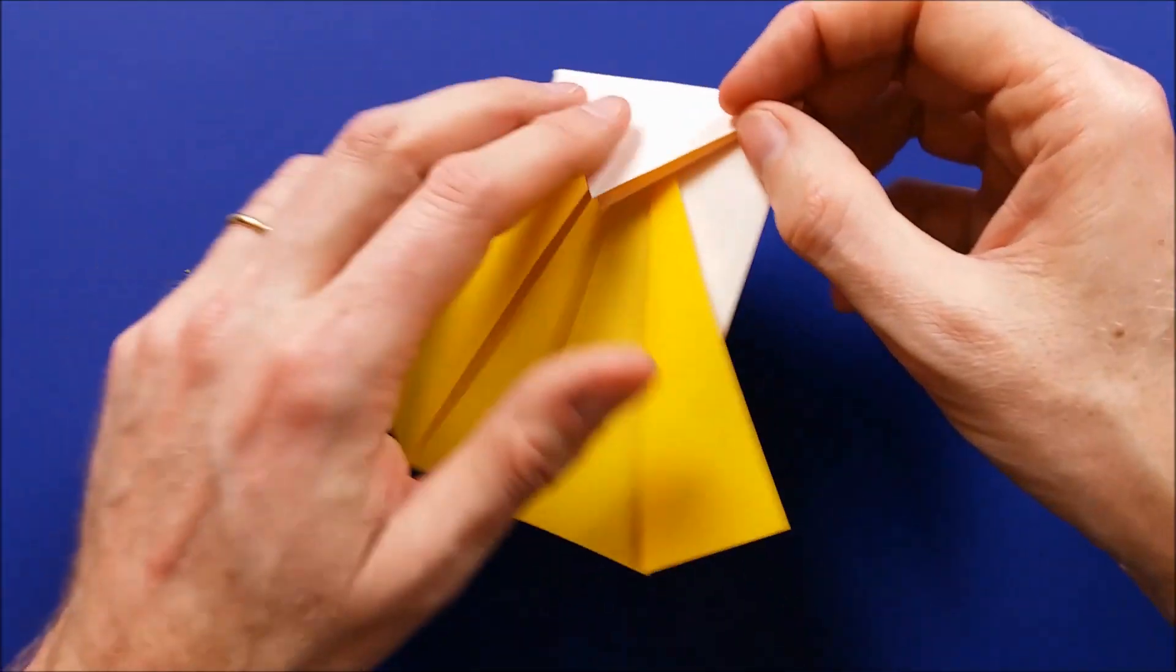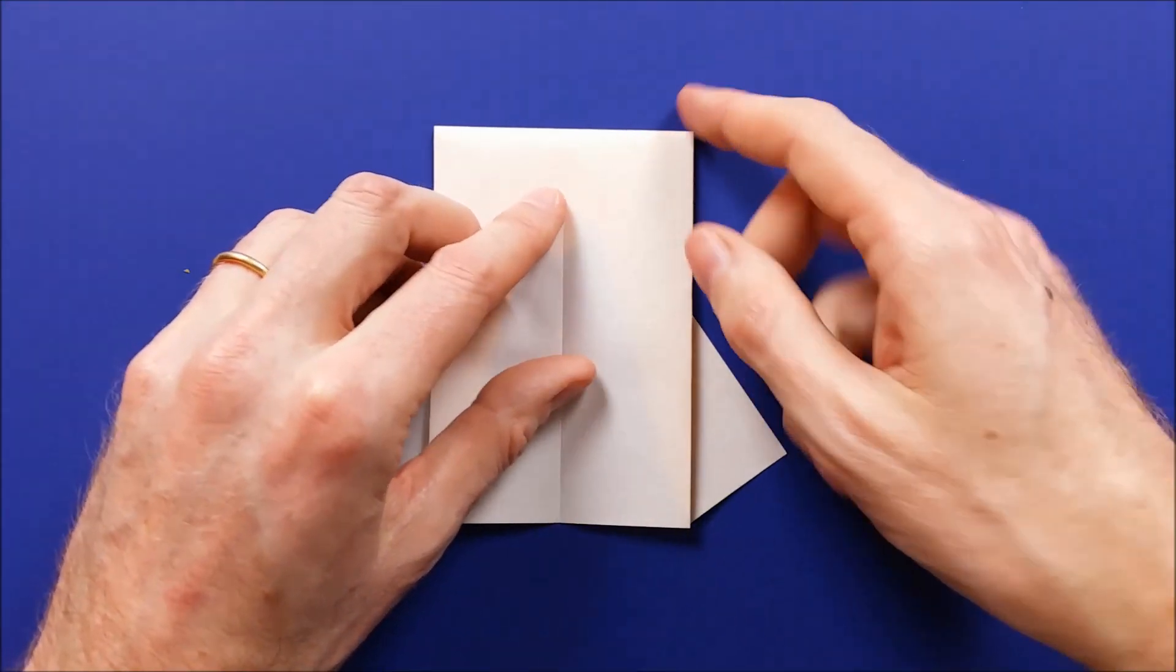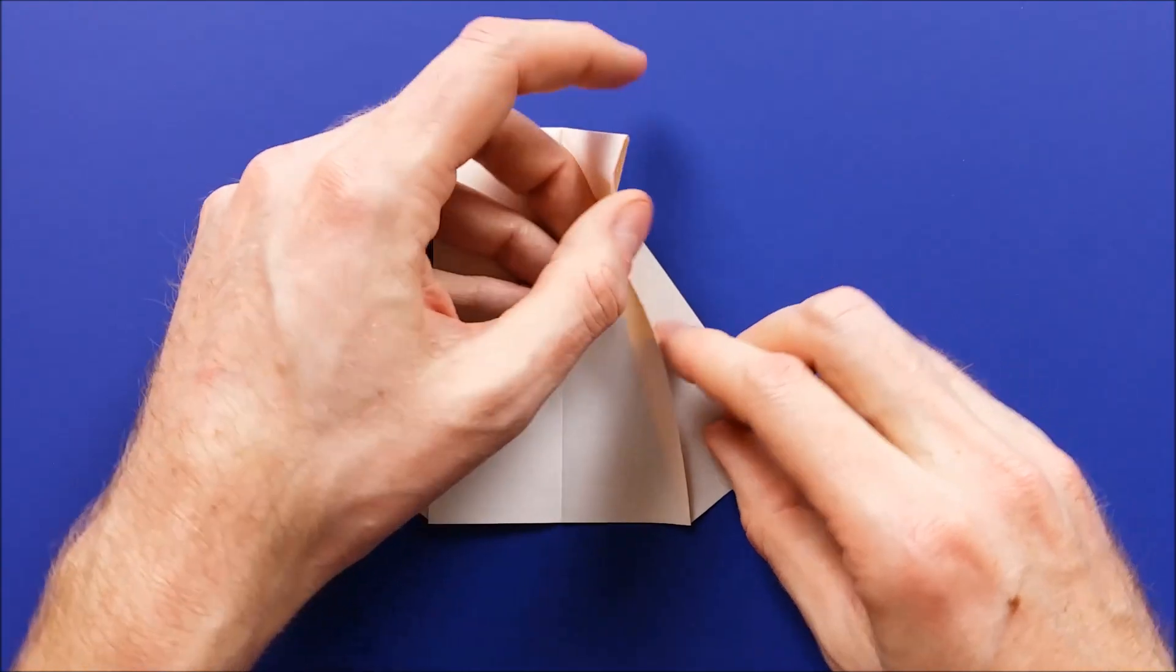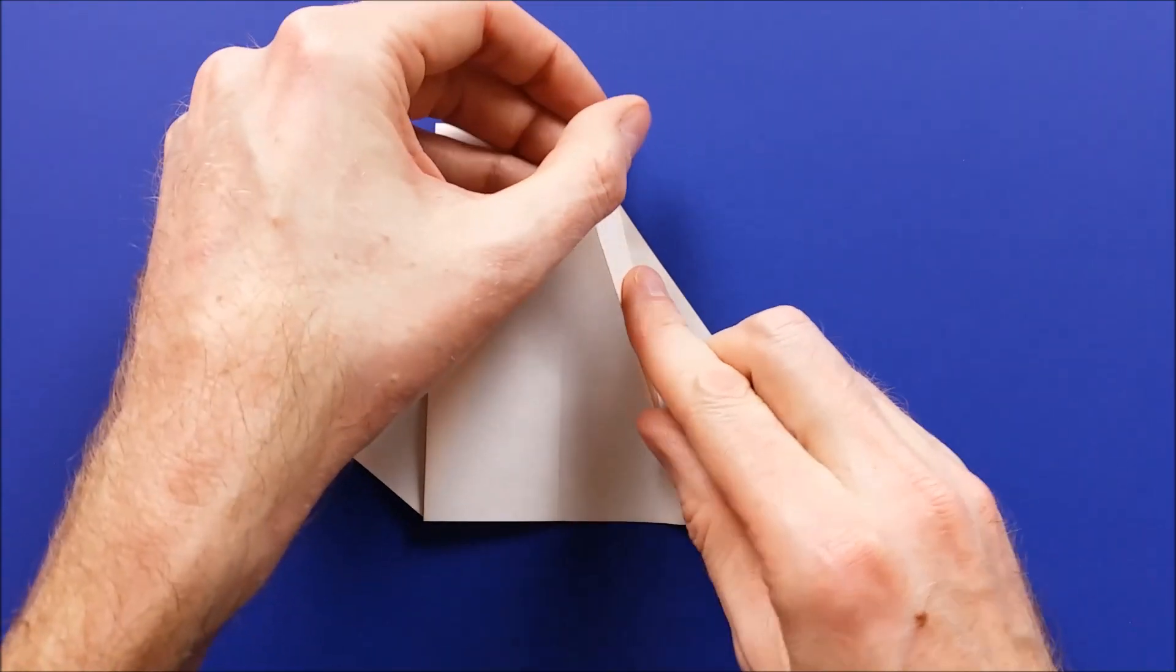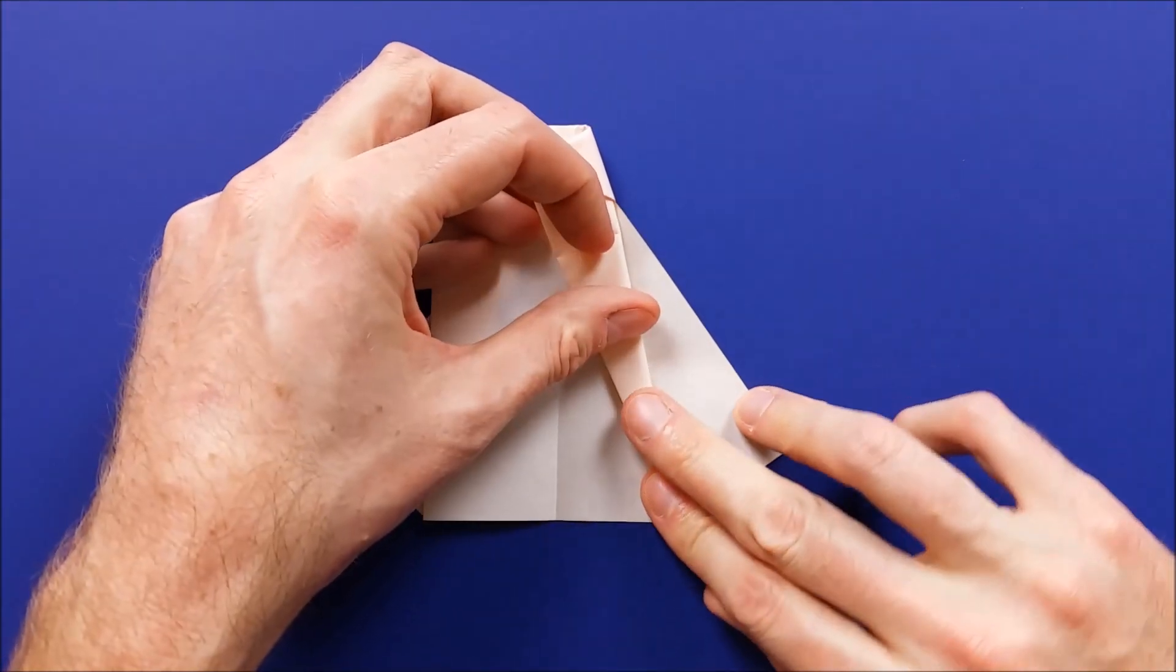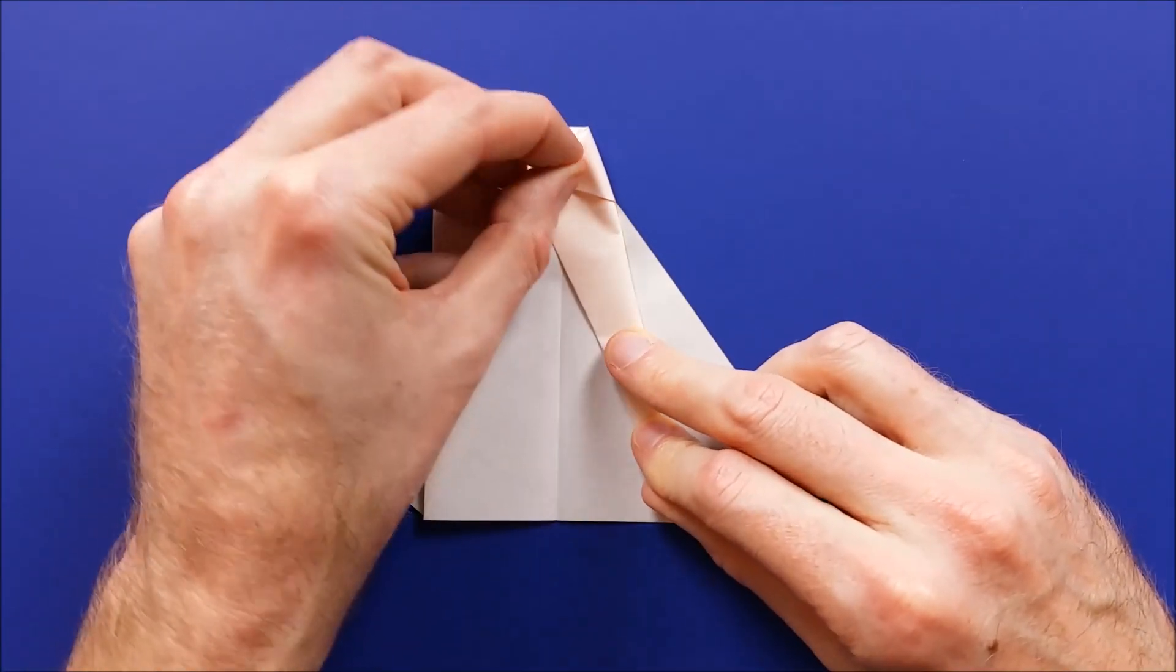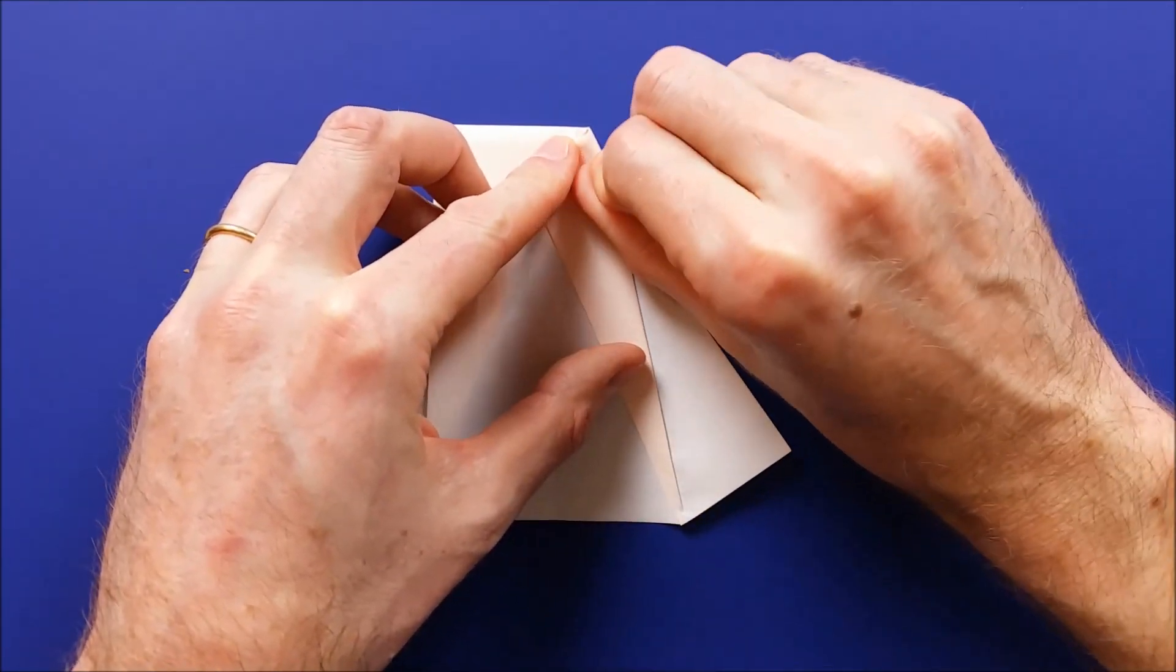Then turn the model over. And now we are going to make a fold by folding from here, this point here. And we'll fold as much as we can here. Fold like this. And mark the fold well at the top.